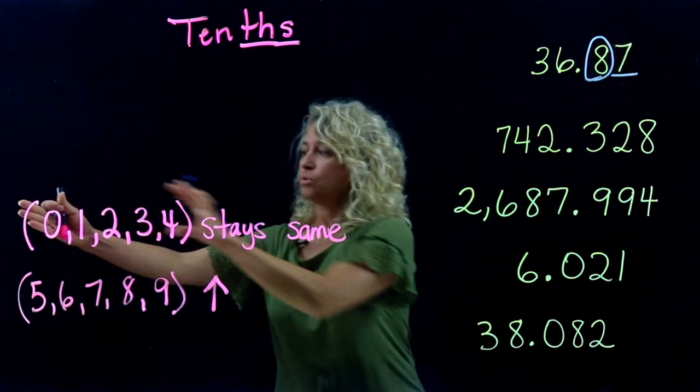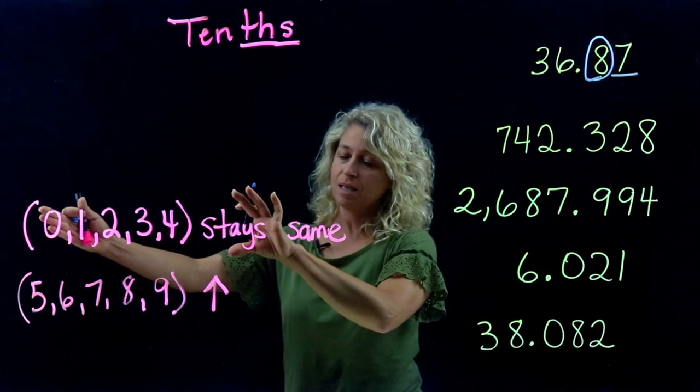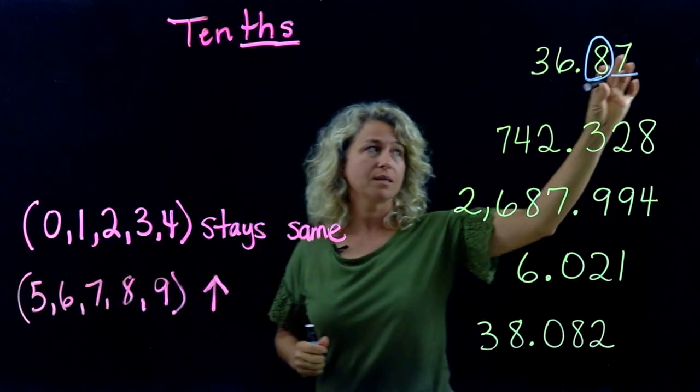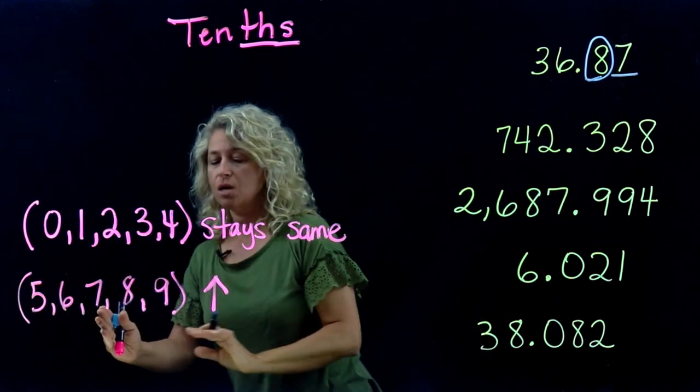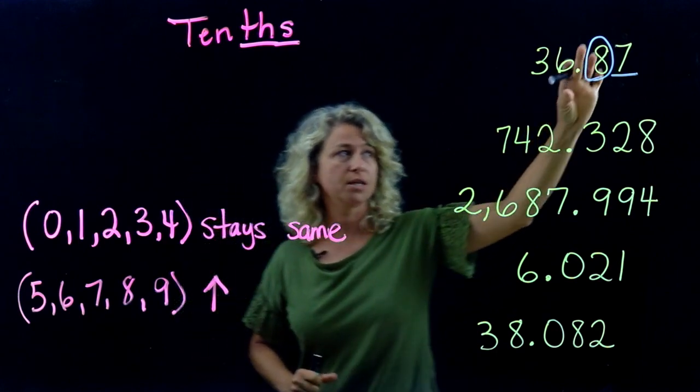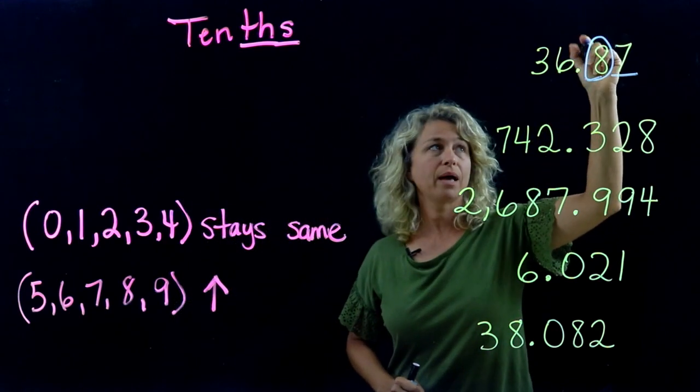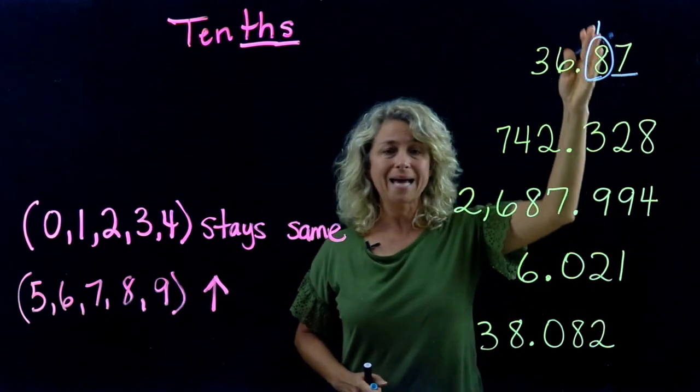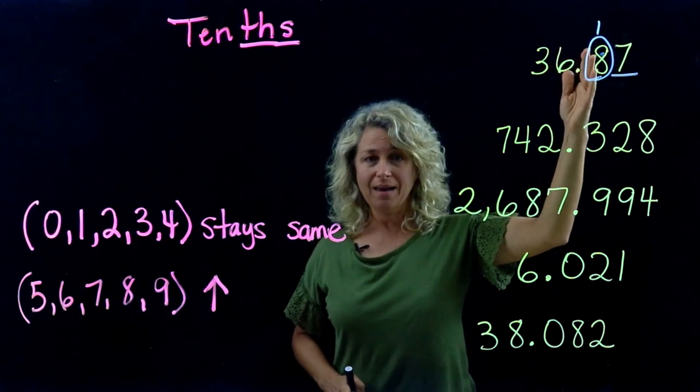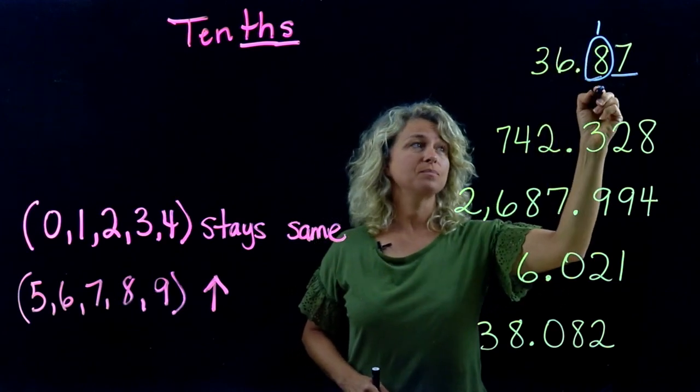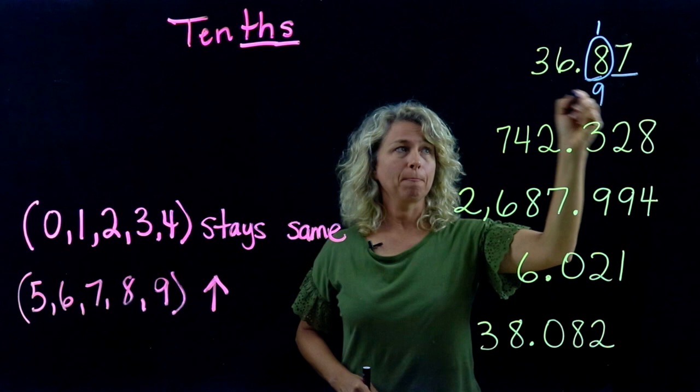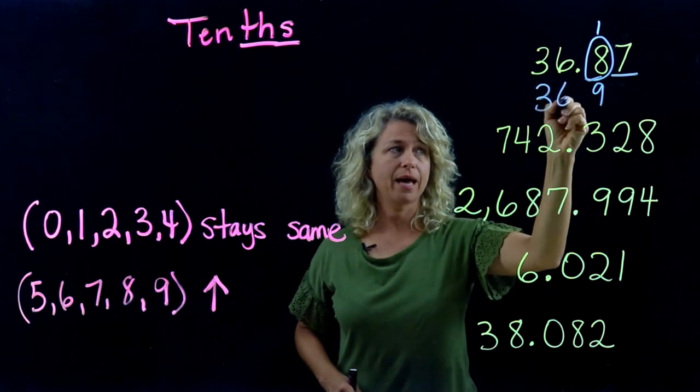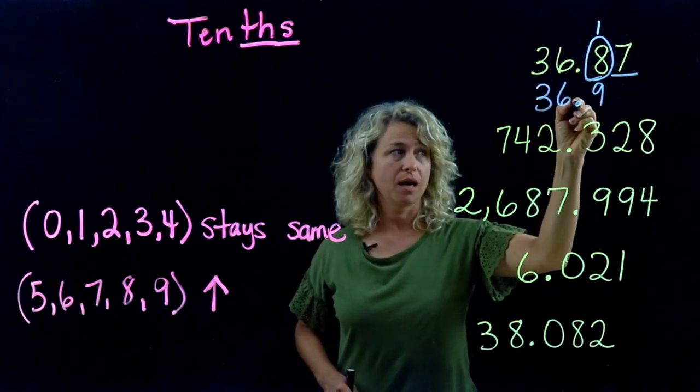Seven is right here, so that means our digit in the tenths place will round up. We're going to add one to the eight and it becomes a nine. These numbers just bring them down—they do not change. Make sure you bring down that important decimal.